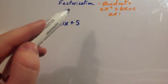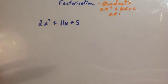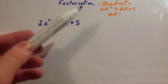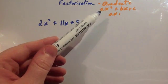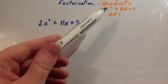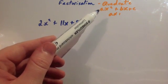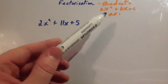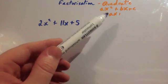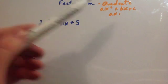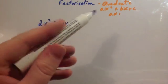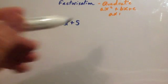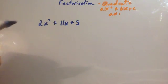In this video we're going to look at quadratic factorization again. This time it's whenever you've got a number in front of the x squared — something like 2x squared or 3x squared — so really whenever the coefficient of x squared is not equal to 1. If you've just got an x squared, have a look at the other factorization video on quadratics.